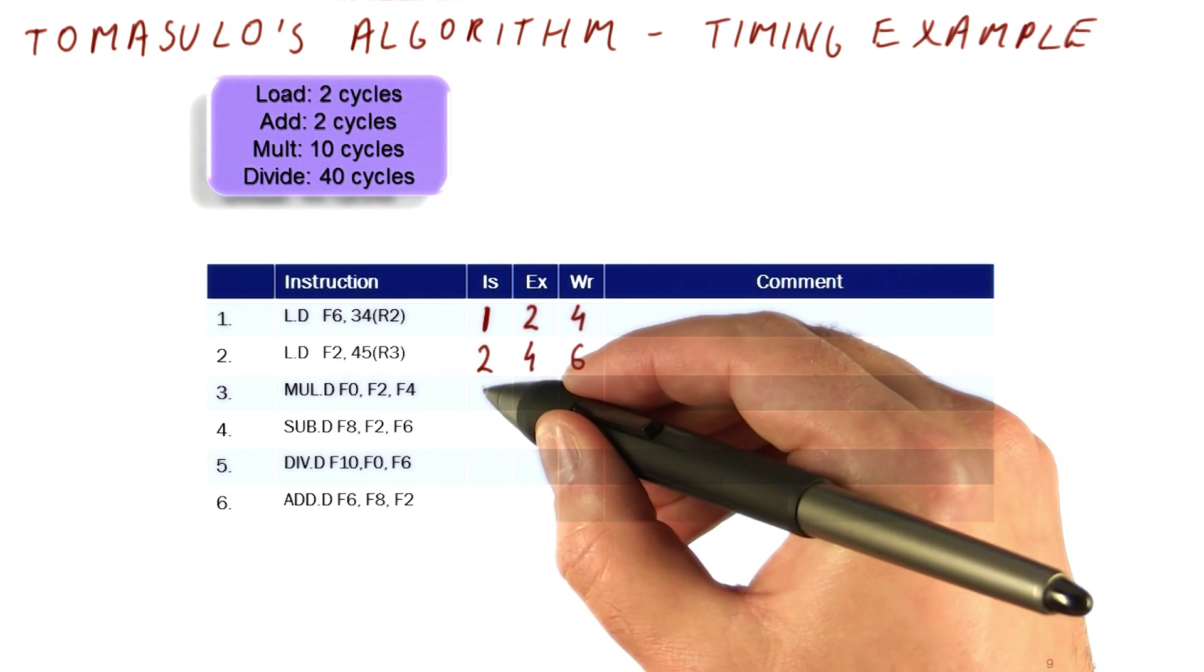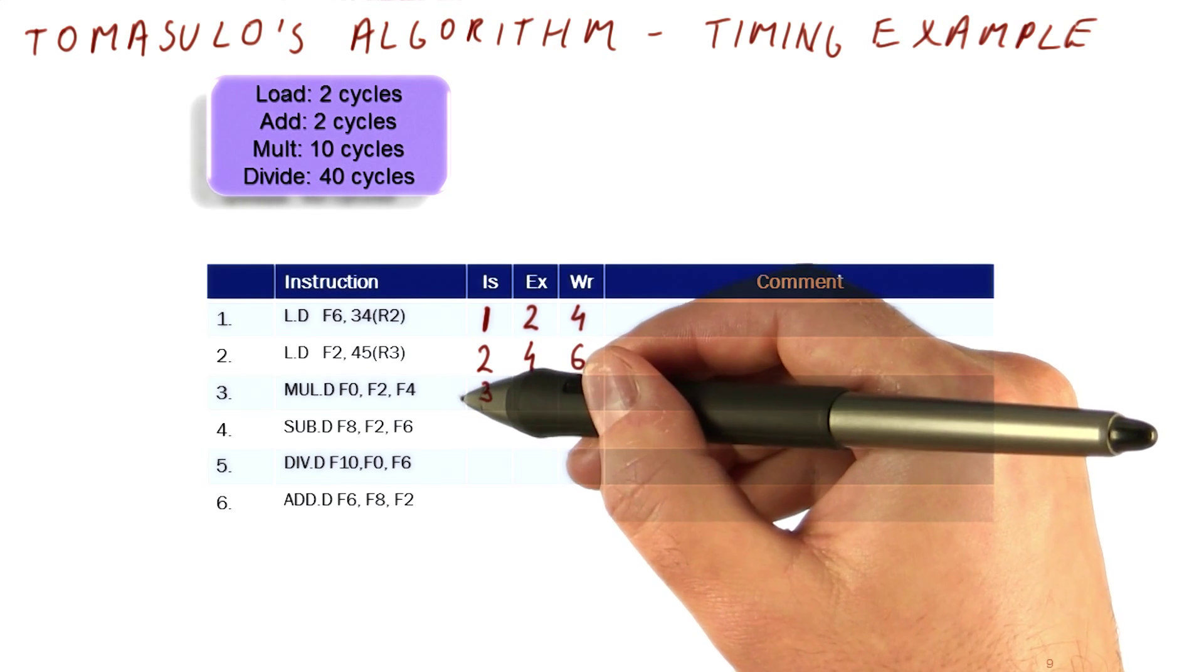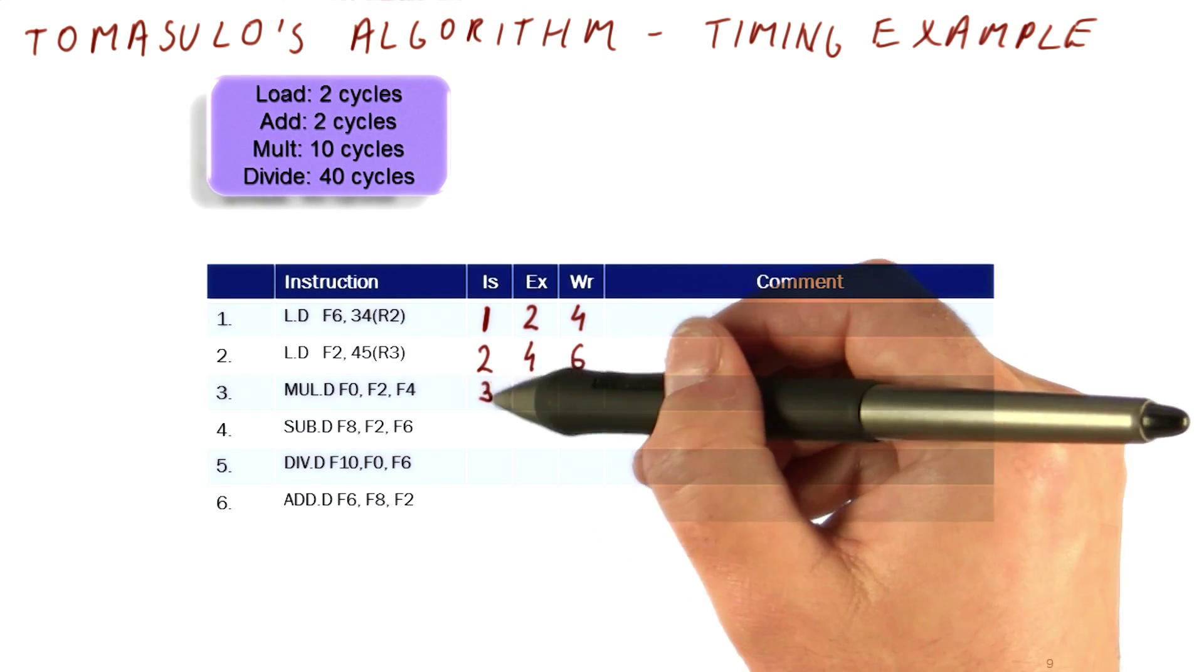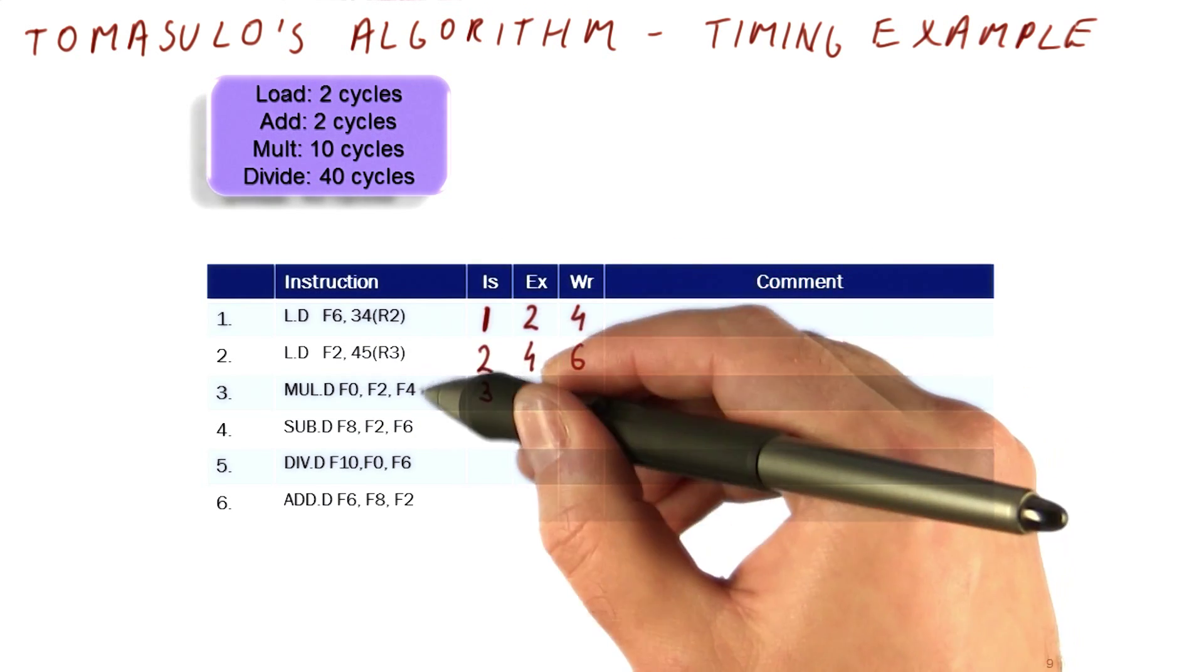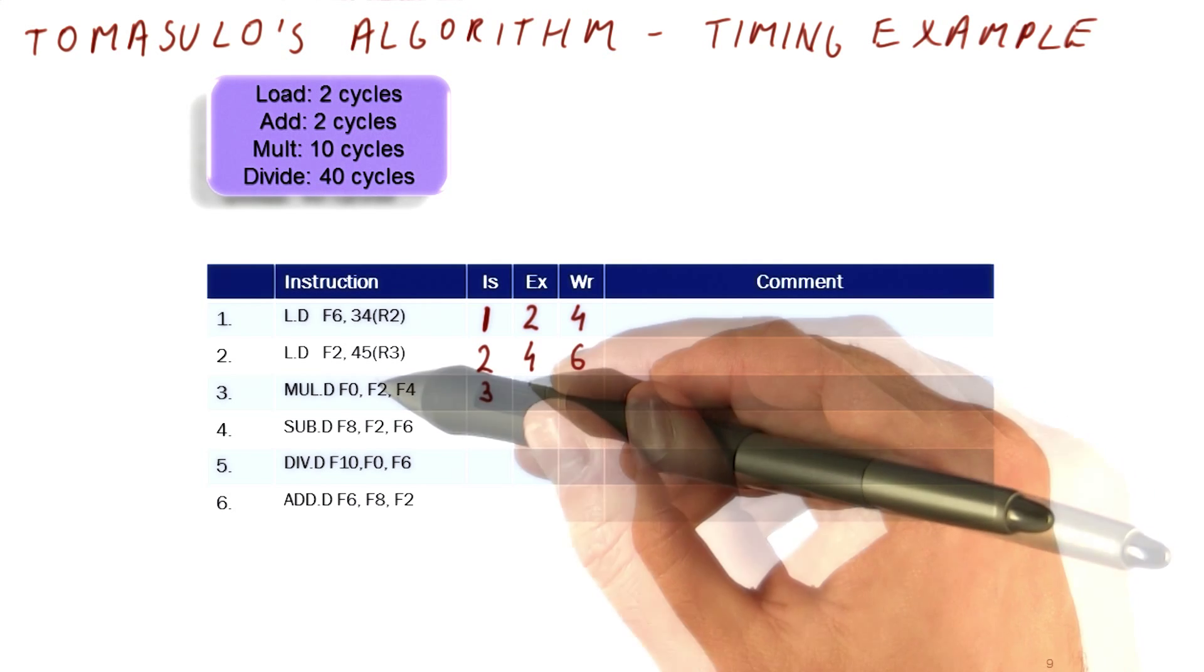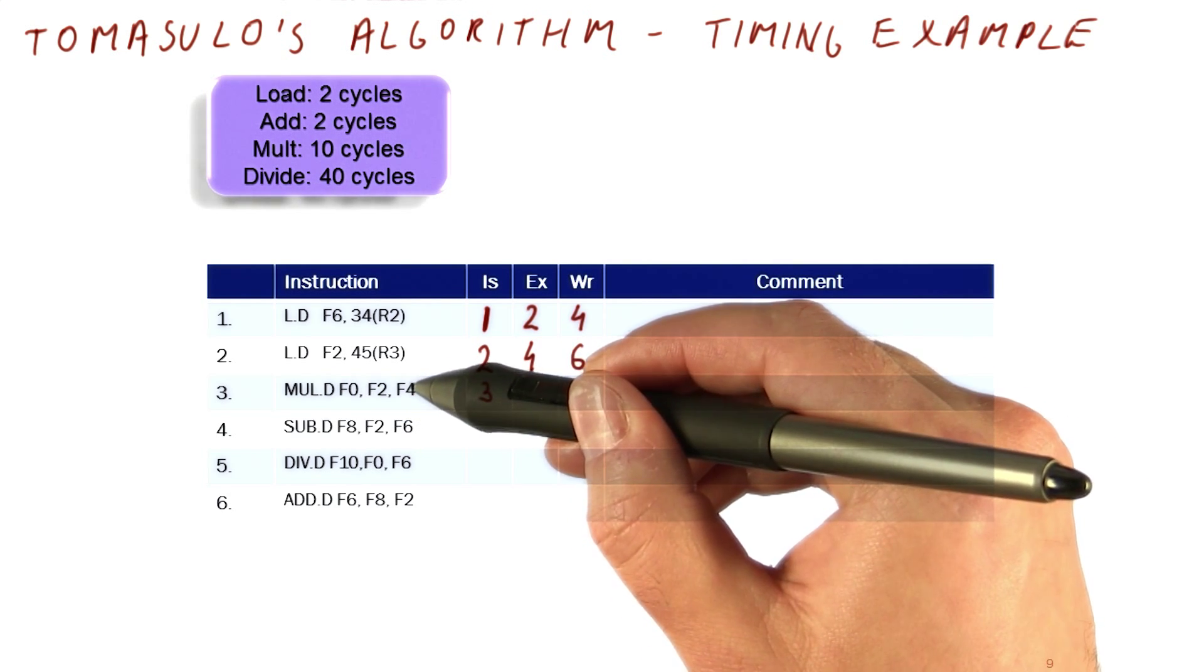In cycle three, we're going to be issuing this. It uses a different unit. So again, you have to check basically in cycle three, is there an available multiply unit, by looking at what's currently using the reservation stations. And then you have to check for dependencies. So for example, this is waiting for F2 and F4.